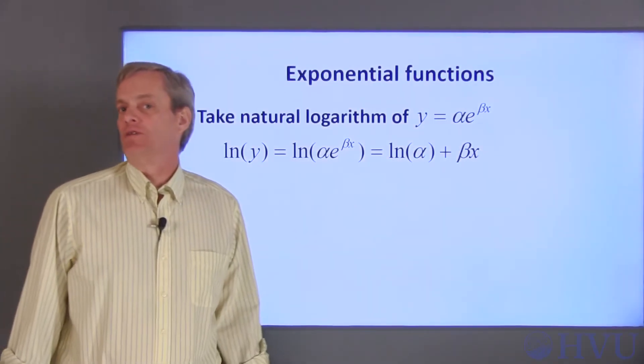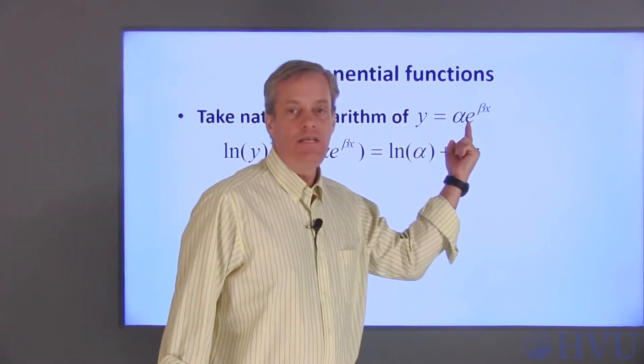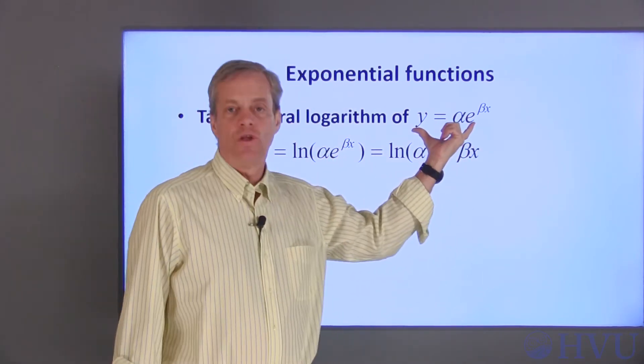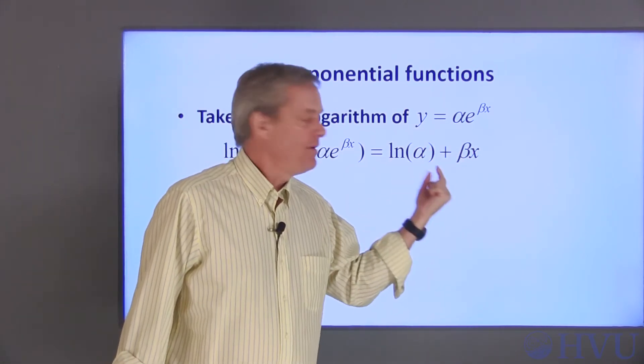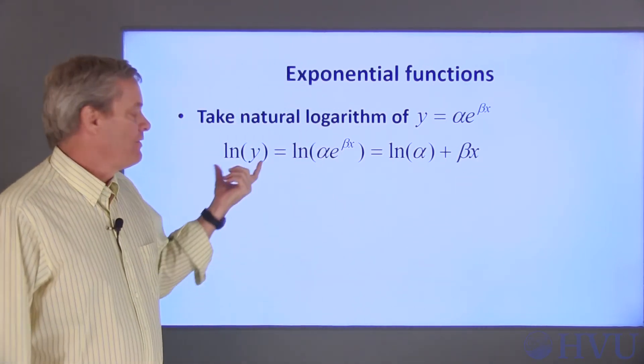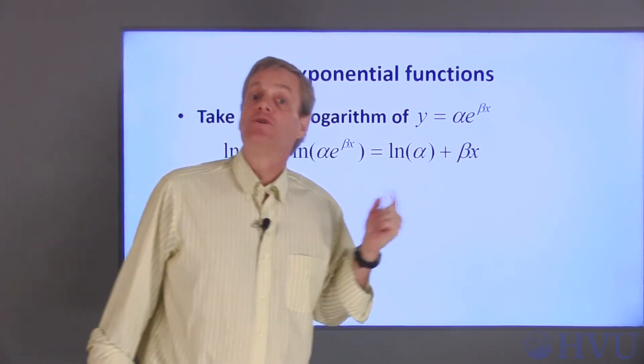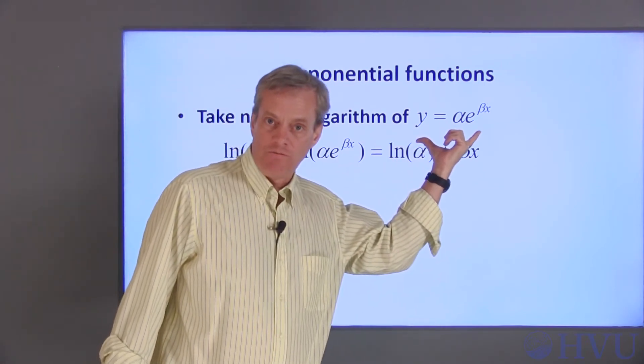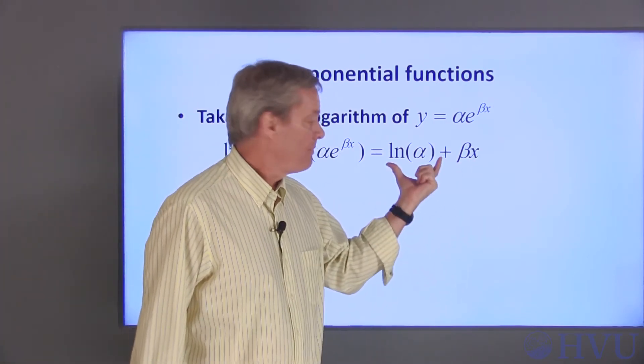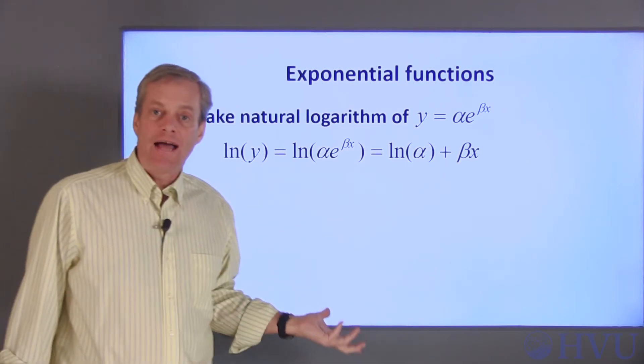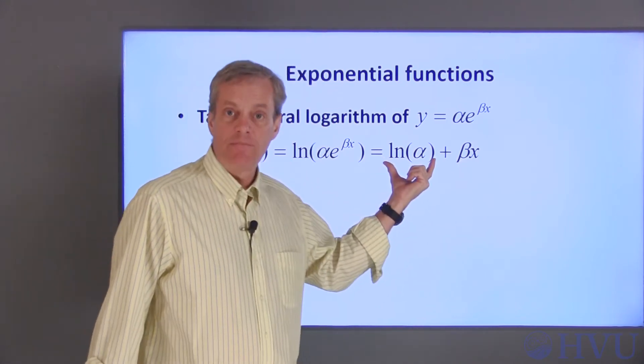Now let's talk about using logarithms to perform an exponential curve fit. The form of the function we want to fit to the data is alpha times e to the beta x. If we take the natural logarithm of this equation, we get the natural log of y is equal to the natural log of alpha plus beta times x. If y is a number, then natural log of y is a number, and if alpha is a number, then natural log of alpha is a number. So taking the natural log of the exponential function has converted the equation to a straight line of the form y is equal to m times x plus b. Except that its vertical axis is now natural log of y, its slope is beta and the y-intercept is natural log of alpha.